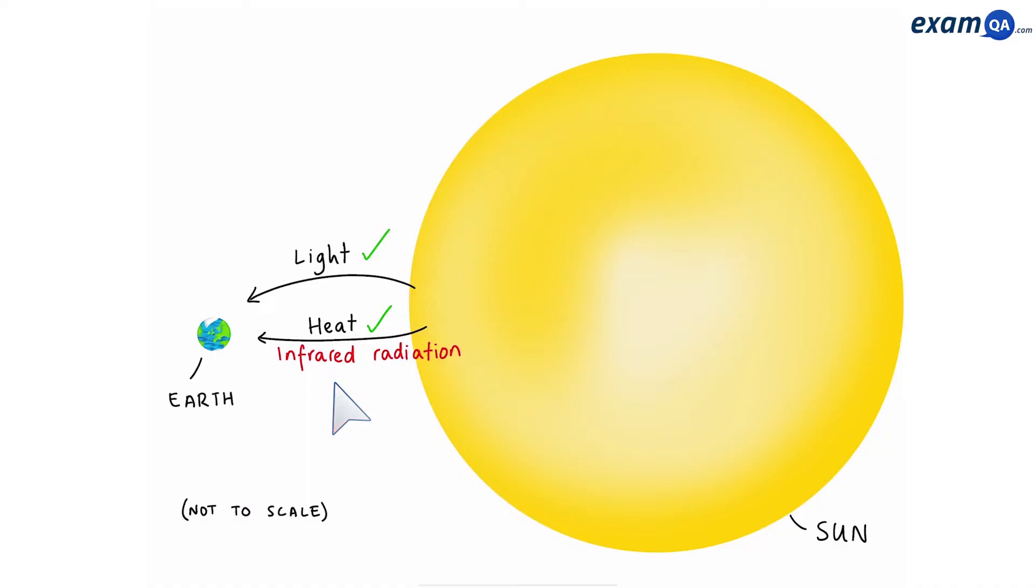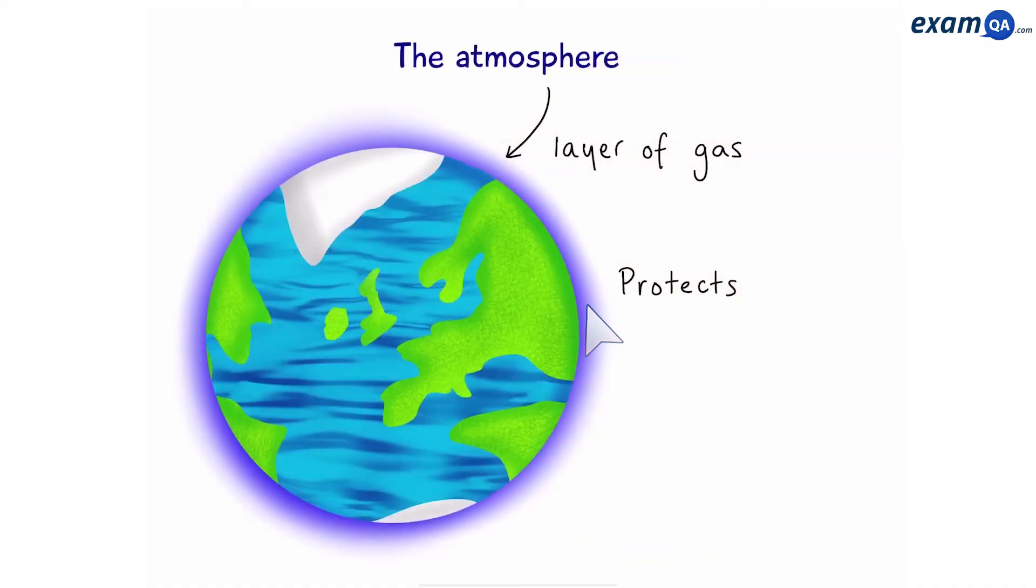However, the story between the Earth and the Sun is not always a happy one. The Sun also sends out harmful ultraviolet radiation, also known as UV. This is harmful because it can lead to skin cancer. So, our atmosphere protects us from this ultraviolet radiation. So, one of the jobs of the atmosphere is to protect us from radiation.